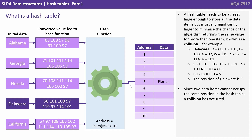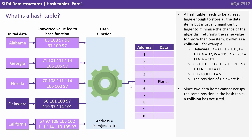For example, let's look at trying to store 'Delaware'. Capital D is 68, lowercase e is 101. We carry that through, add the values together, and we get 805. We do 805 modulus 10, just like before, and we get 5 again. So the position of Delaware is 5. Since two data items cannot occupy the same position in the hash table, a collision has occurred.